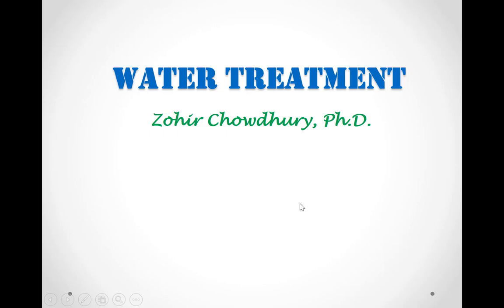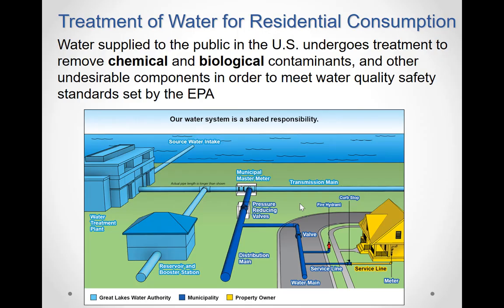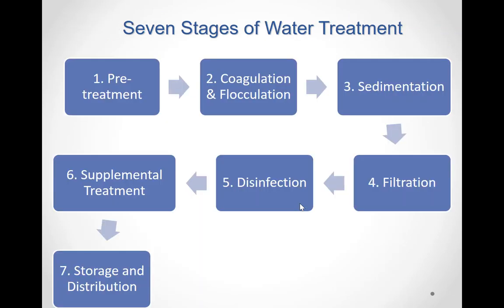Hello, my name is Zohrit Chodri and today's topic is about water treatment. Drinking water supplies in the United States are among the safest in the world. However, even in the US, drinking water sources can become contaminated, causing sickness and disease from waterborne pathogens. Drinking water sources are subject to contamination from chemical and biological agents and require appropriate treatment to remove harmful disease-causing agents and chemicals. Public drinking water systems use various methods of water treatment in order to meet water quality safety standards set by the United States Environmental Protection Agency.